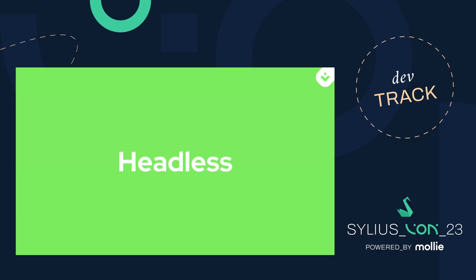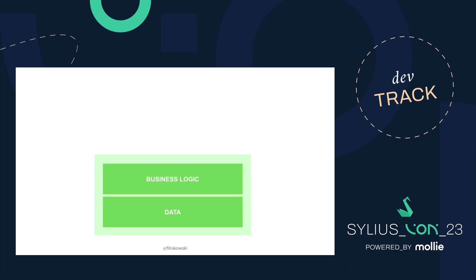Let's move to the main topic of this presentation. Headless is all about separating the front-end from the back-end. If we treat front-end as the head of our application, then we can say that we are decapitating our app and using a better, improved artificial head. Thanks to that, you can use modern JavaScript frameworks like Nuxt, like Next, React, Svelte, or even SolidJS. The communication with the back-end happens only through an API — the API layer is the only part of your back-end application that influences the front-end.